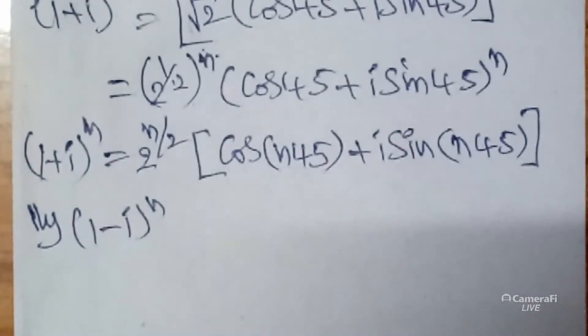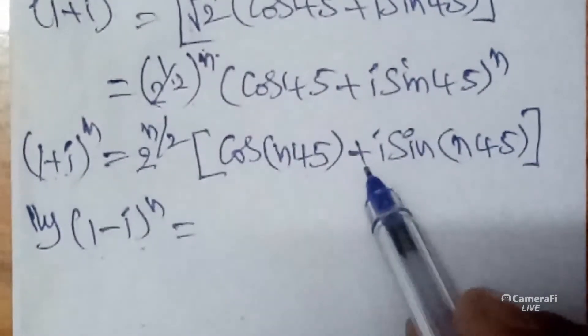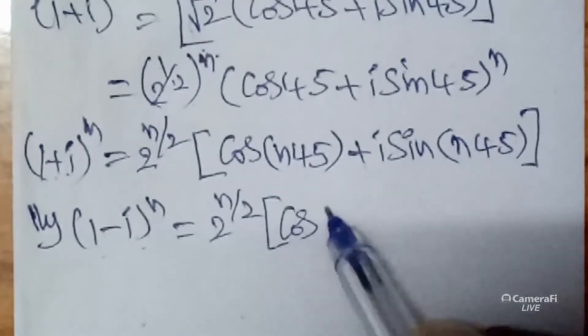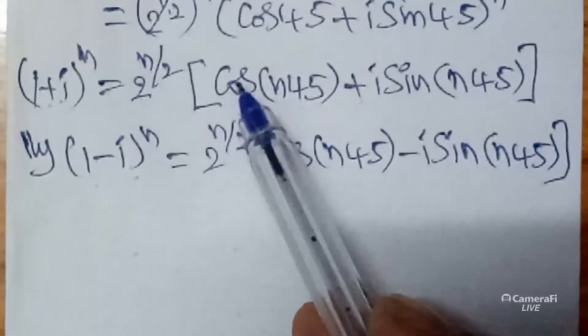Next, similarly we can write 1 minus i whole power n. According to the question we have 1 plus i whole power n and 1 minus i whole power n. No need to simplify again — you can write similarly: 2 power n by 2 into cos of n times 45 minus i sine of n times 45. So 1 minus i whole power n equals 2 power n by 2 into cos n 45 minus i sine n 45.